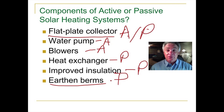So those are some of the components active and passive systems. Flat plate collectors, passive with an active part in it. And then, of course, blowers and fans and water pumps are active. Heat exchanger is passive, but again, to get air to move through the pipes, or water, you're going to need an active system and improve insulation and earthen berms. Those are all types of passive ones.